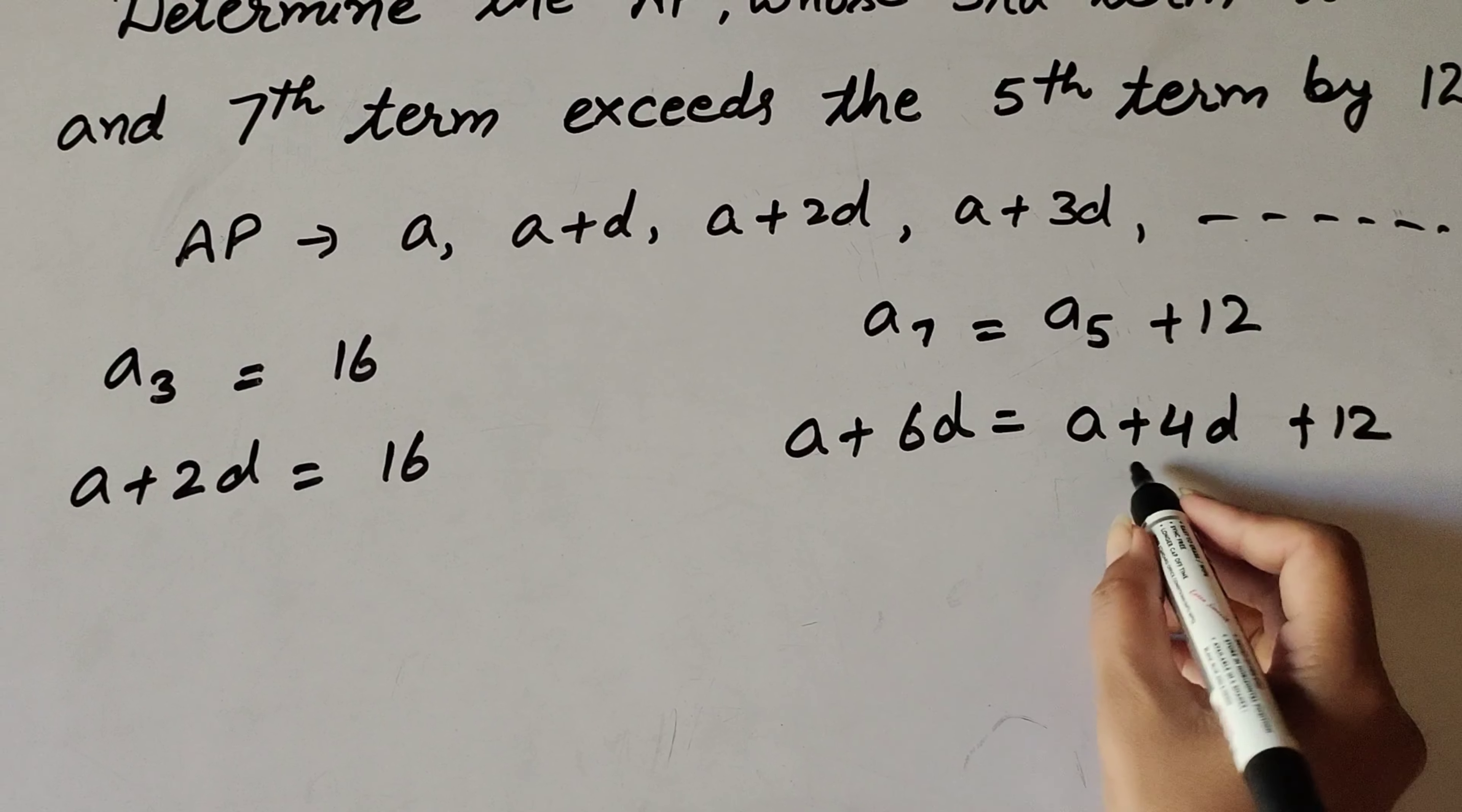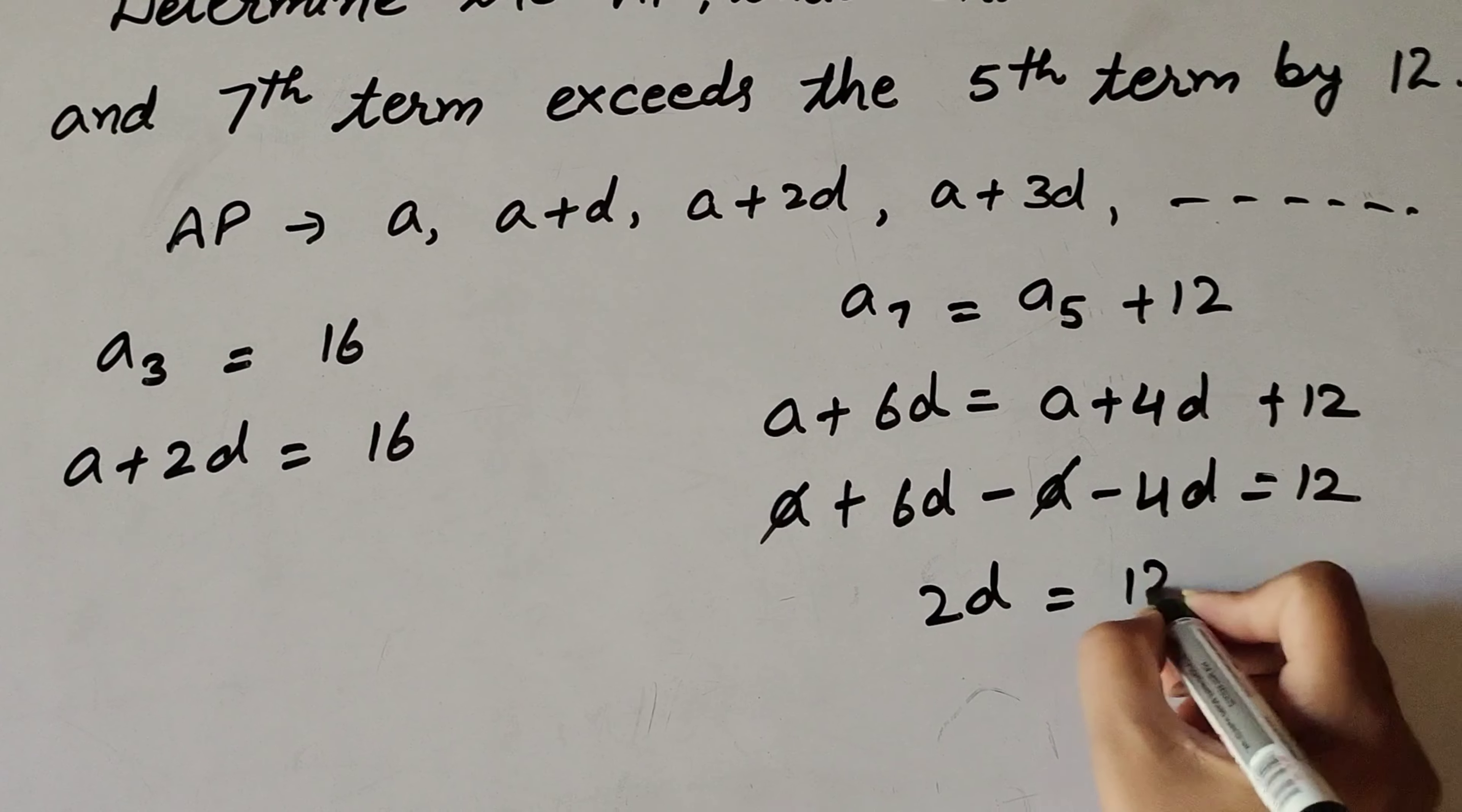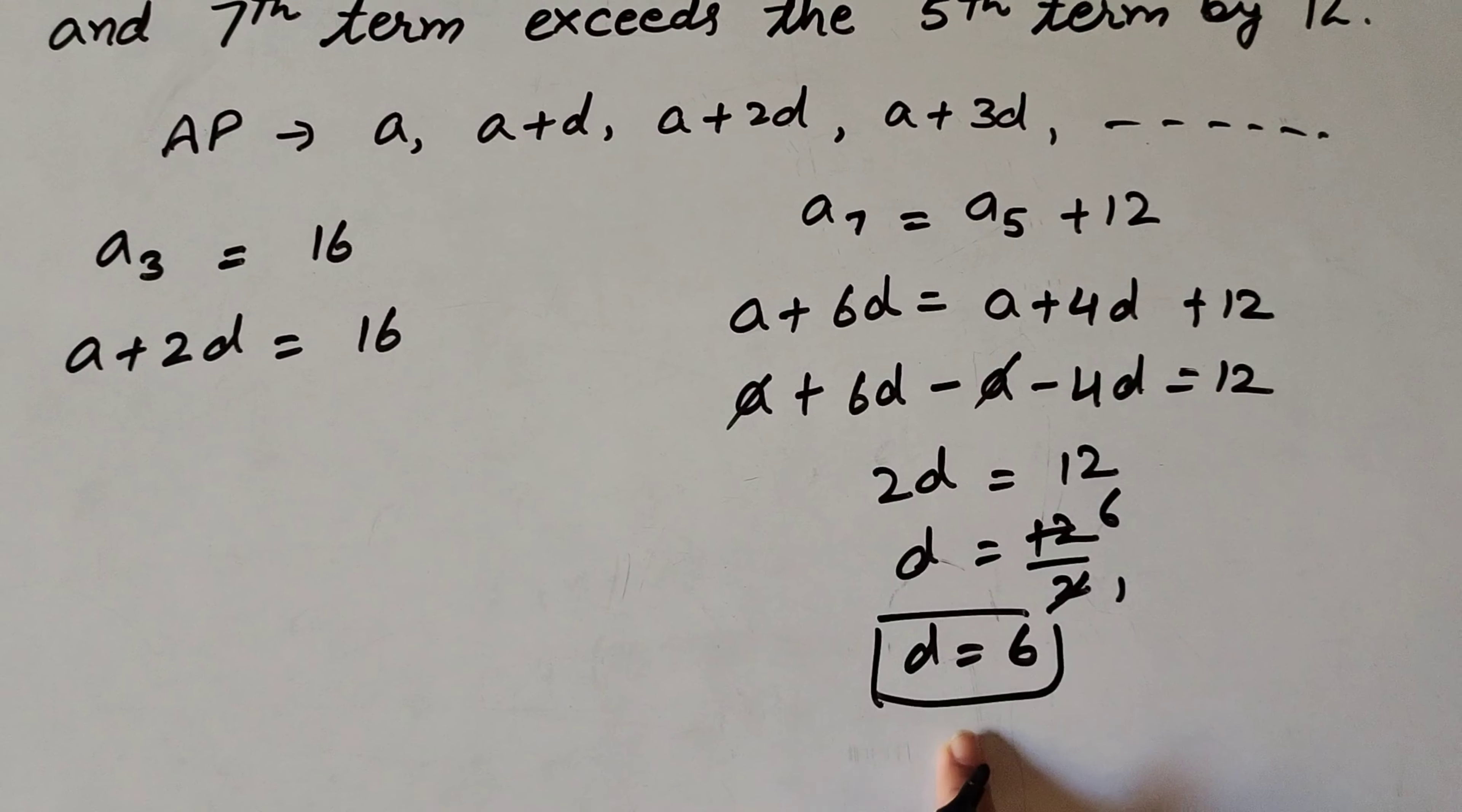Now we transpose a plus 4d to the left hand side. So a plus 6d minus a minus 4d equals 12. A minus a cancels, 6d minus 4d equals 2d equals 12. Transposing the 2 to the right hand side, d equals 12 divided by 2. Simplifying, d equals 6, so the common difference is 6.